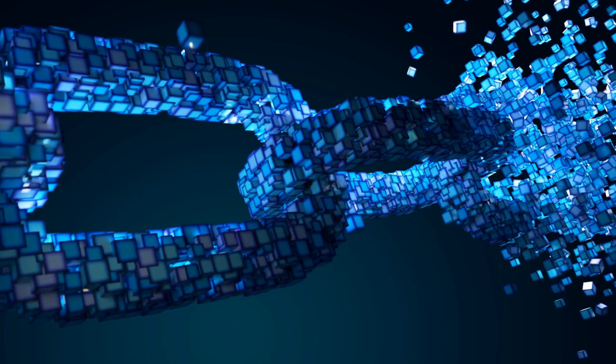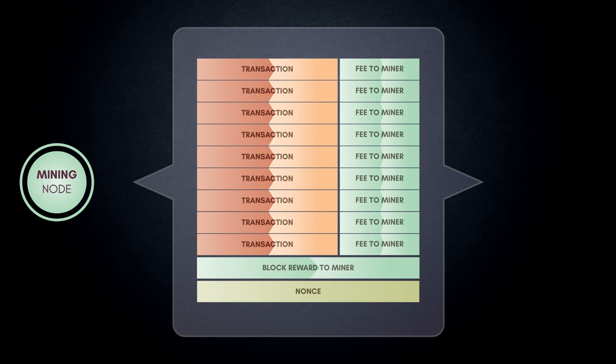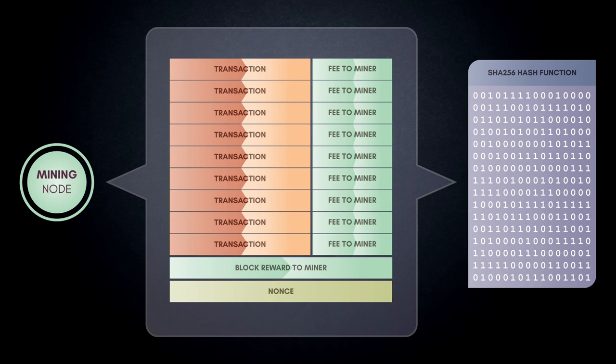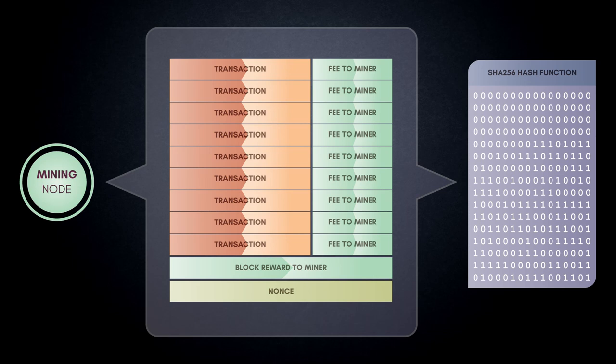When a miner assembles a new candidate block, a random number called a nonce is added. A cryptographic hash function called SHA-256 is then applied to the block. Hash functions convert an arbitrary length of data to a stream of bits of a fixed length, in this case 256 bits. They are not reversible, and changing just a single bit in the source data will dramatically change the resultant hash. In order for a block to be considered valid, a nonce value must be found that produces a block hash that starts with a minimum number of zeros.